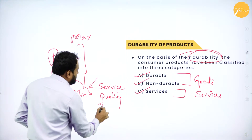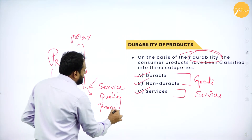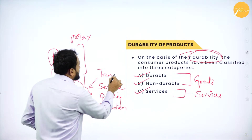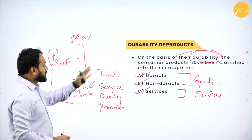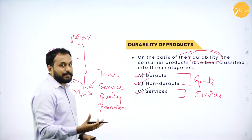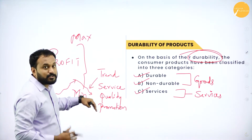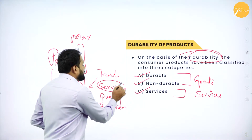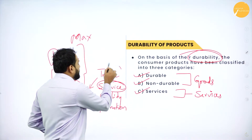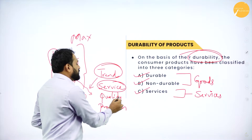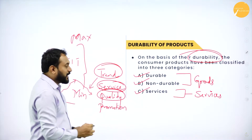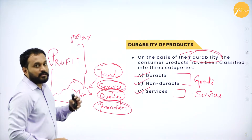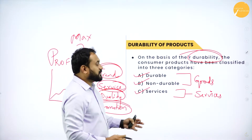If sales of a product go down, it could be because the promotion did not happen properly or the trend of the customer changed. To succeed, you should always provide good services, manufacture products that follow trends, ensure quality, and do proper promotion.